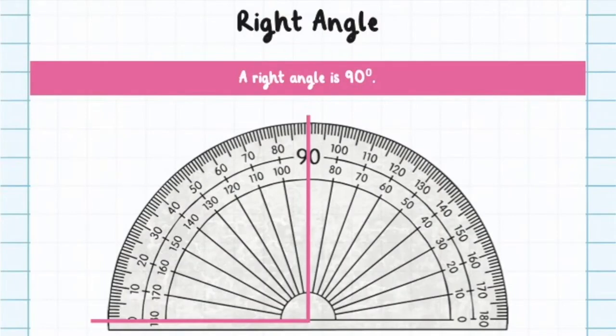For example, a right angle is 90 degrees. An acute angle is less than 90 degrees.